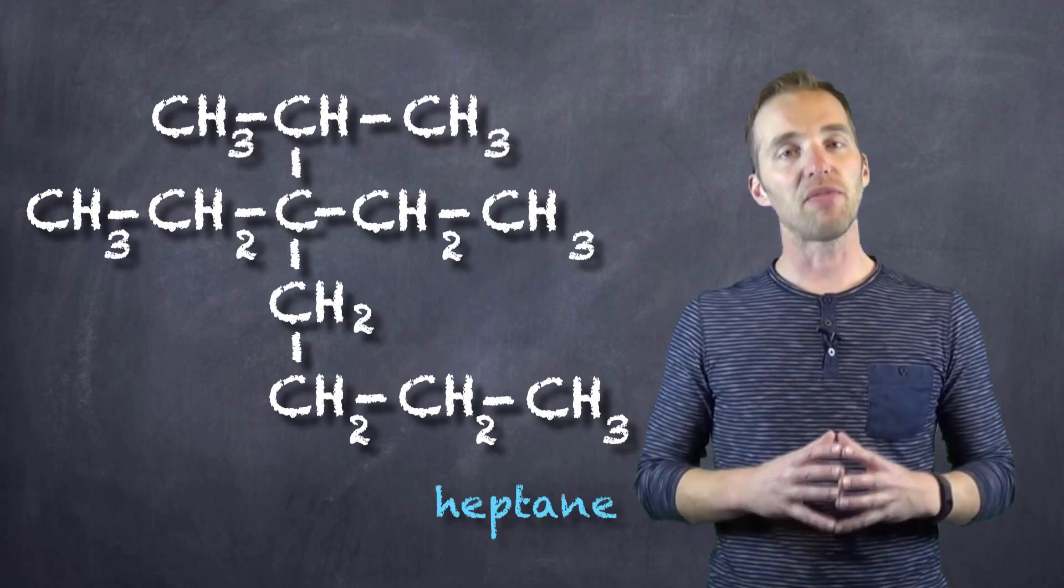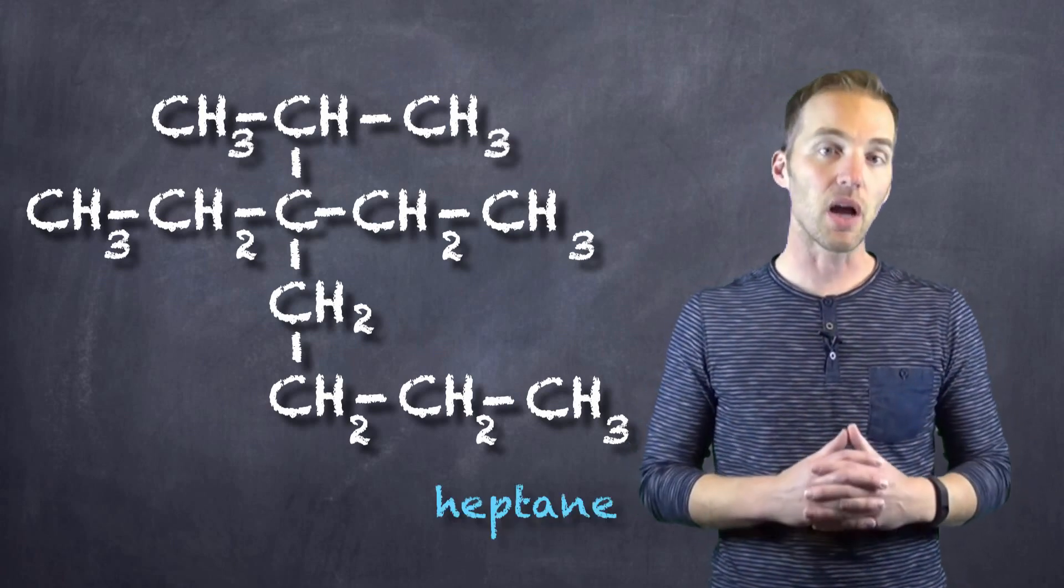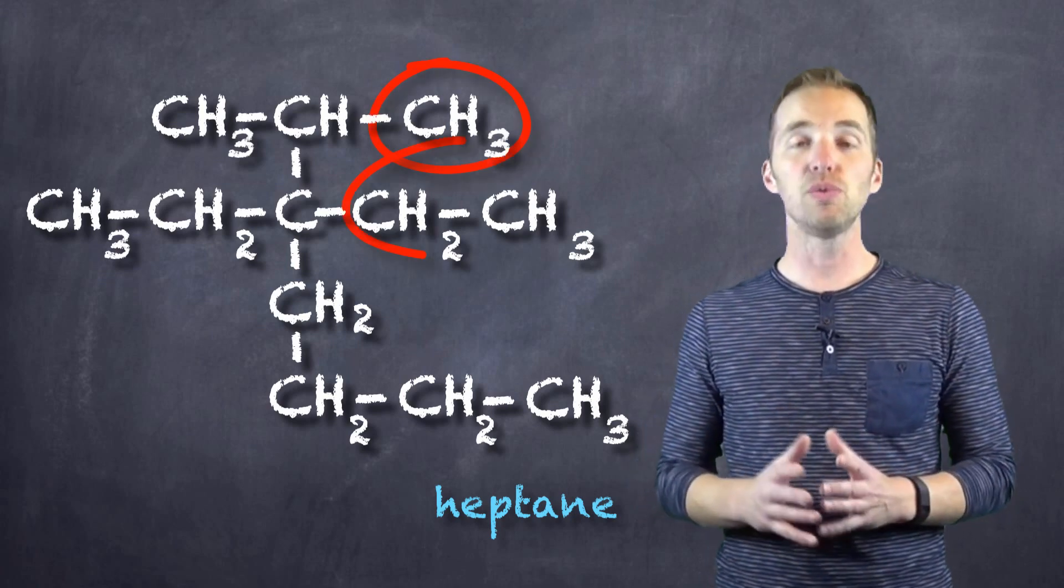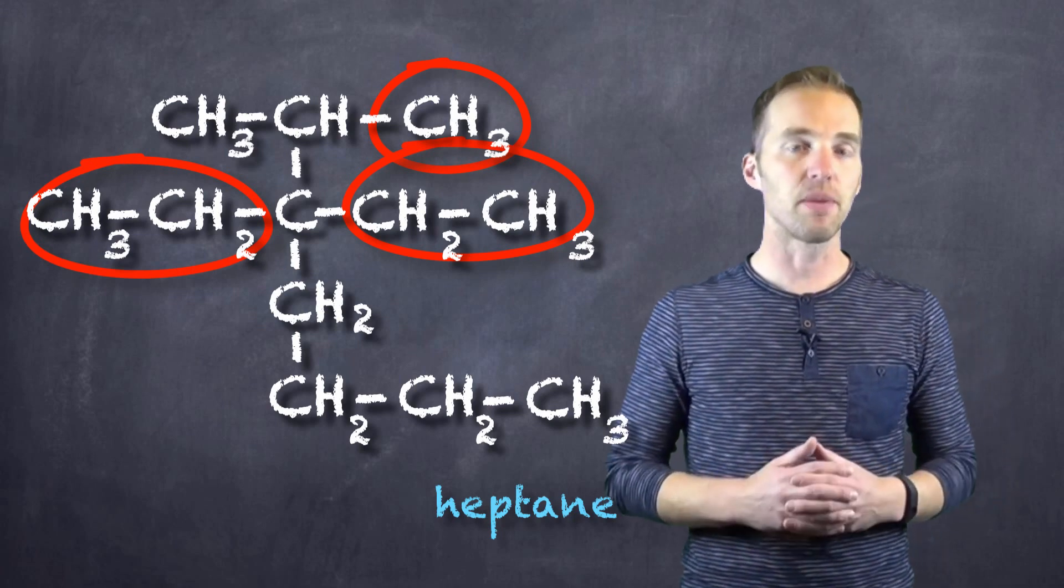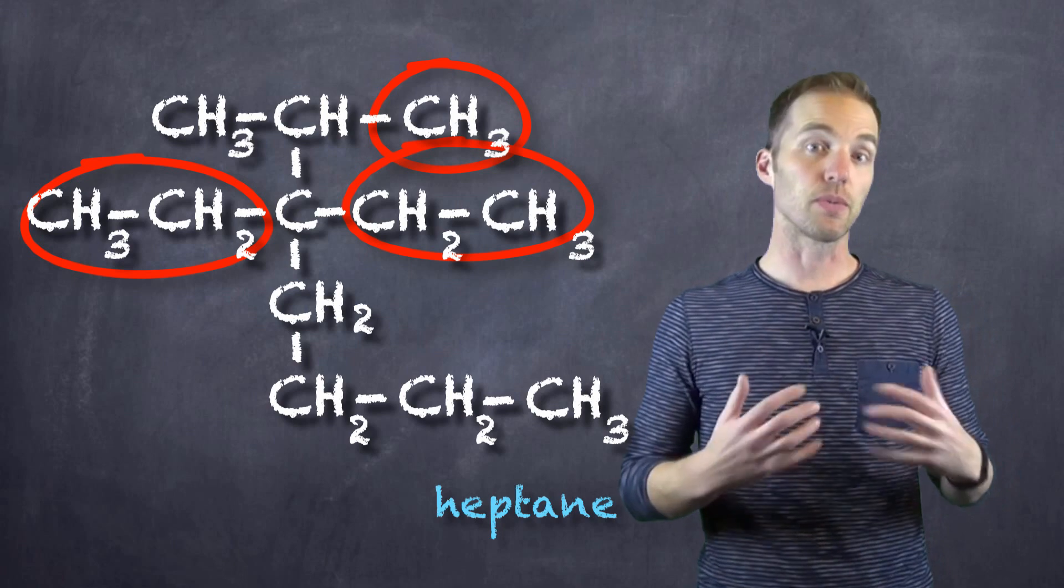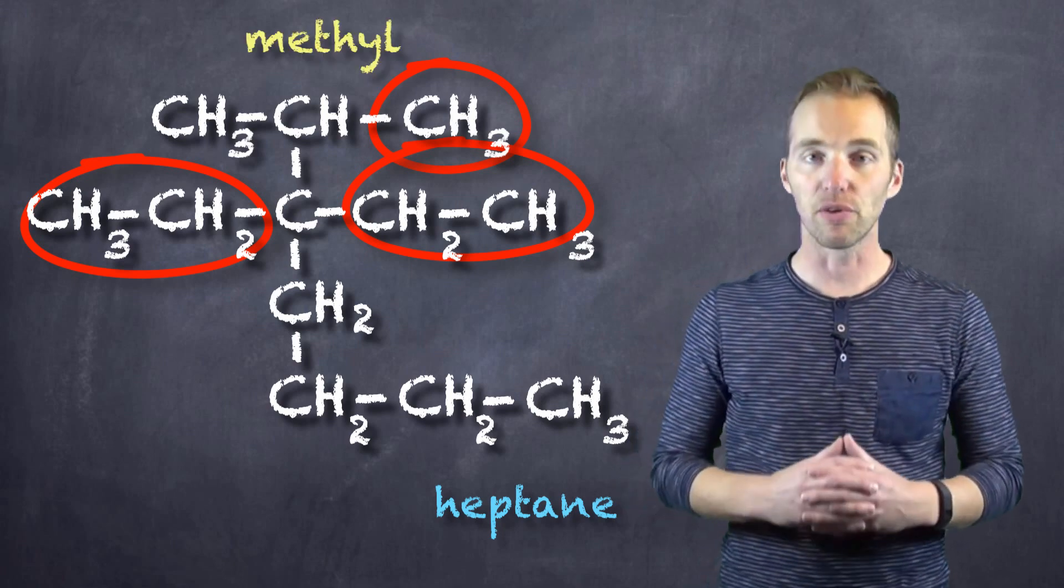Now what we have to do is identify any possible branches that are coming off of our parent chain, and I think we can identify one, two, three branches that are not part of the parent chain. We can see here that the first one we've identified, or at least the first one I've identified, is a methyl group, because there is only one carbon in that branch.